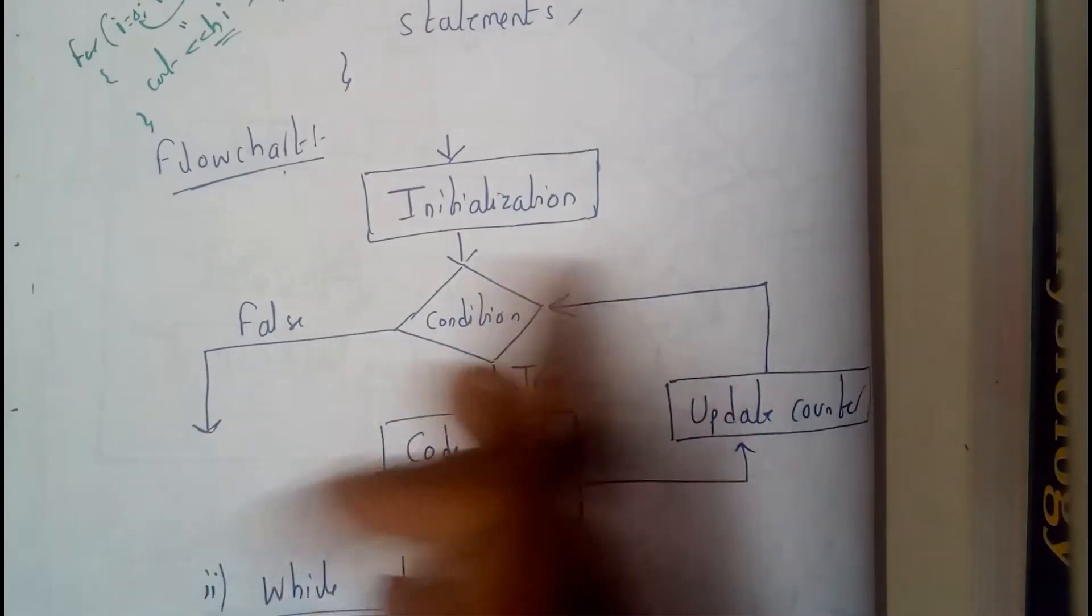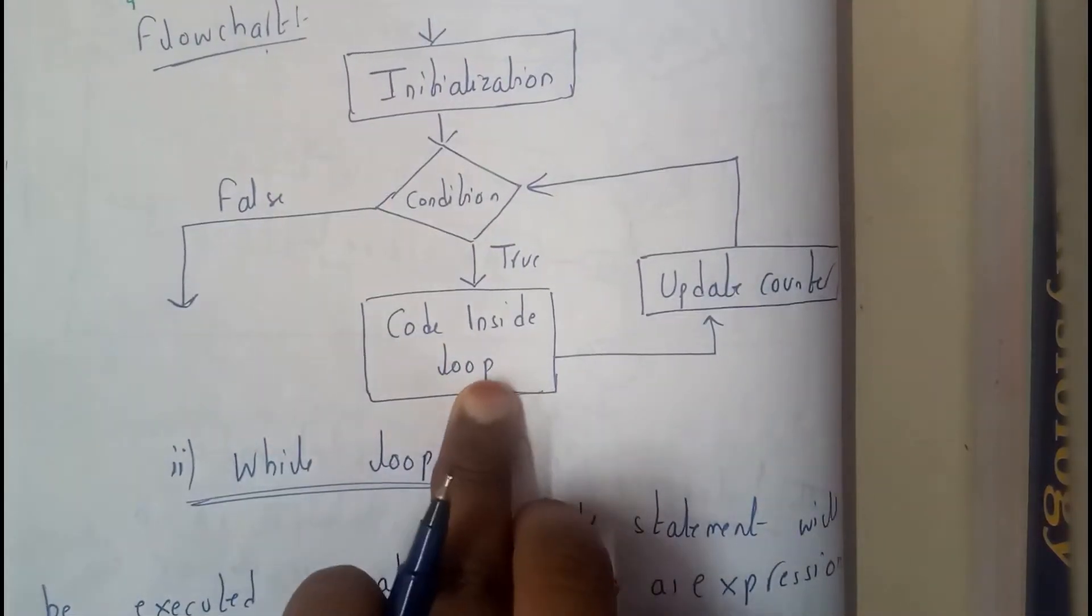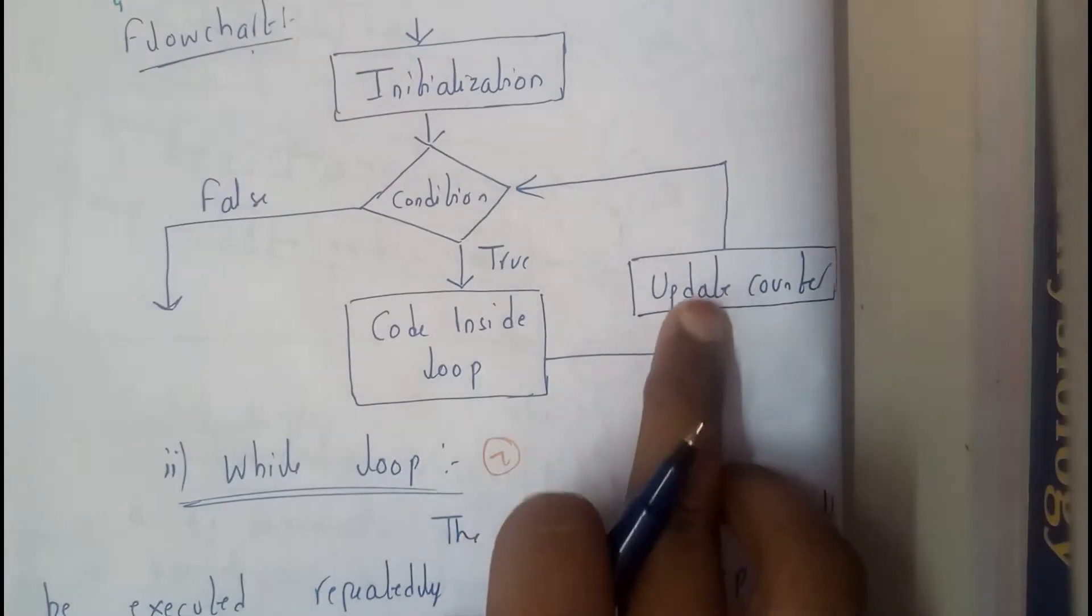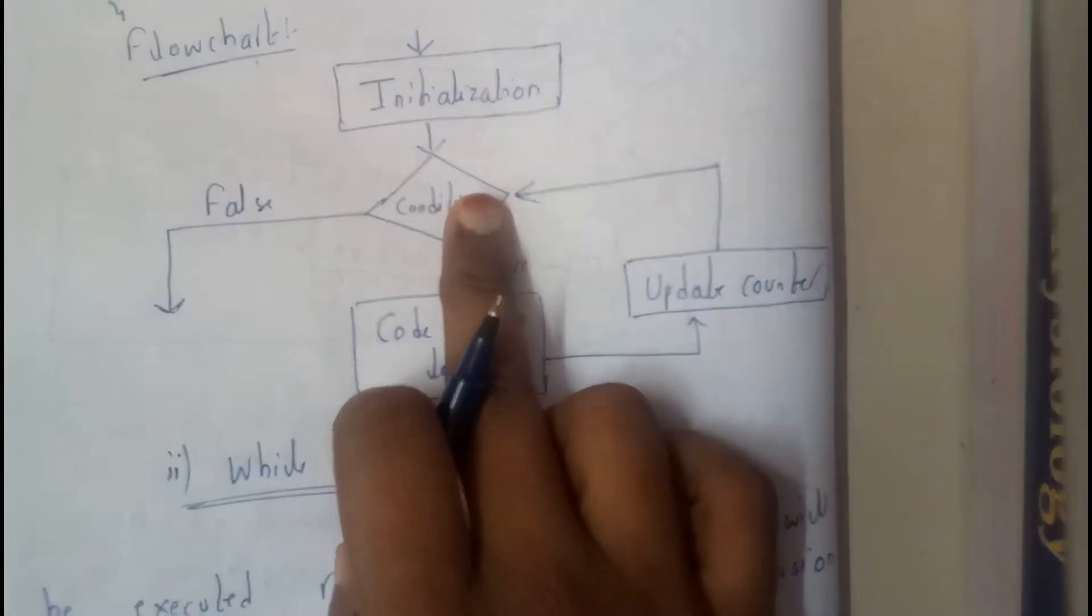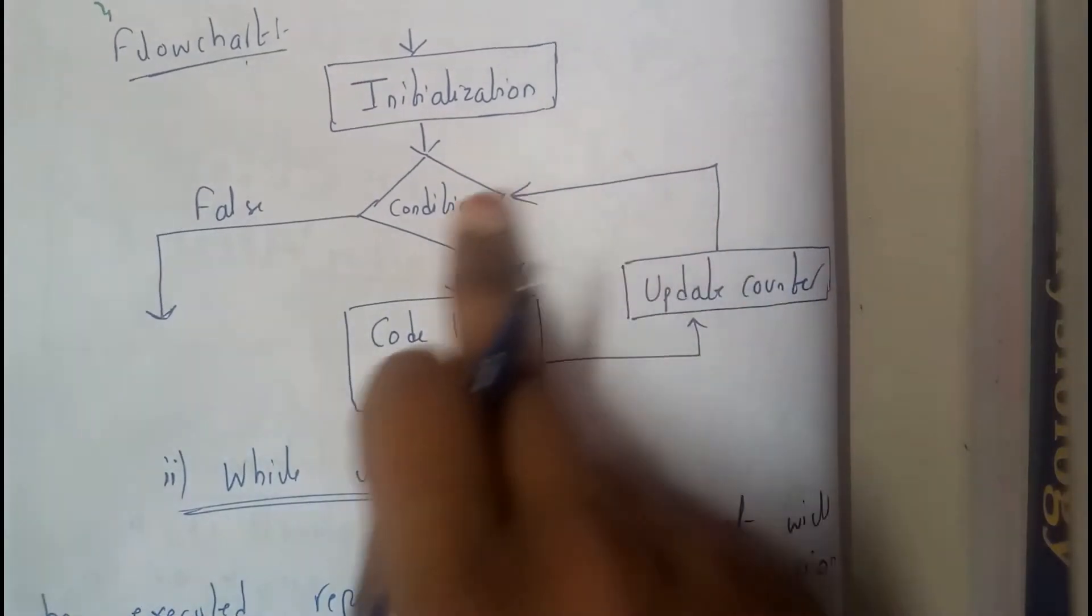If it is true, the inner code will be executed and then the value is updated, and again the condition is checked. This process continues like a loop, right? So that's the reason why these conditions are called looping conditions.